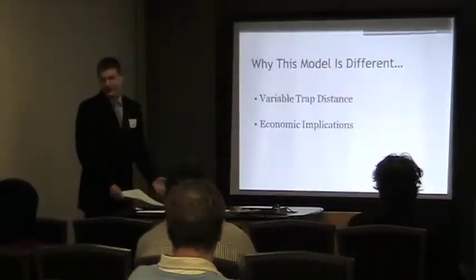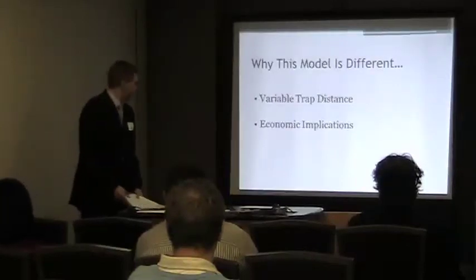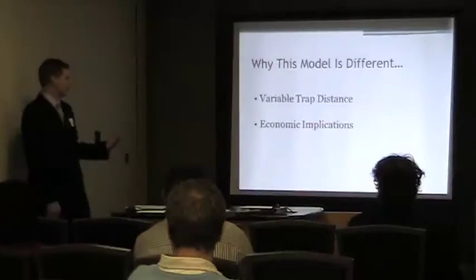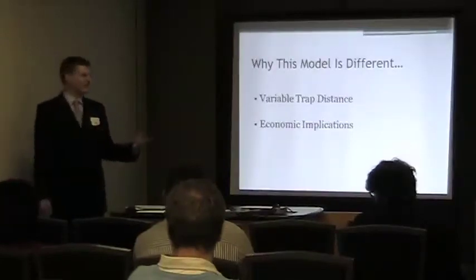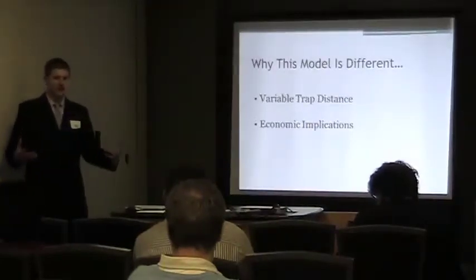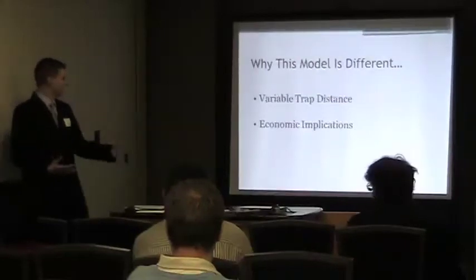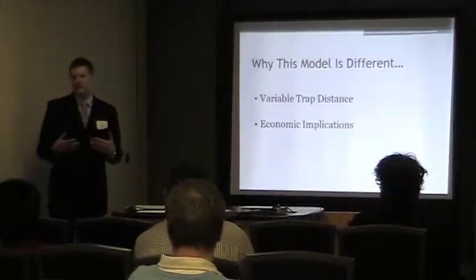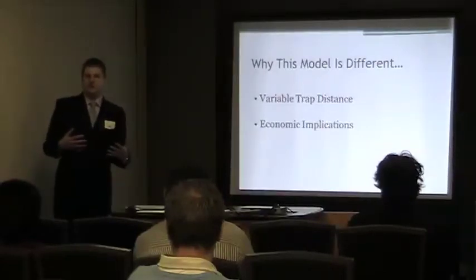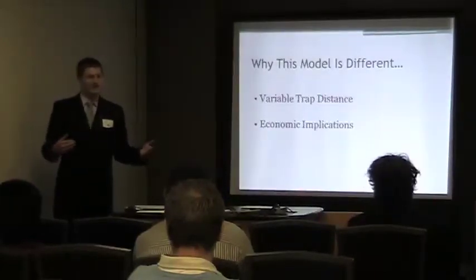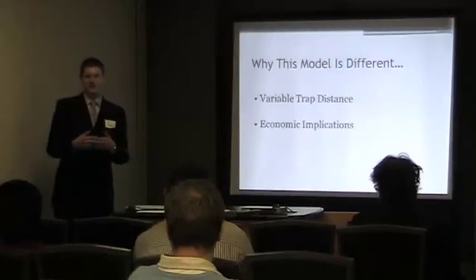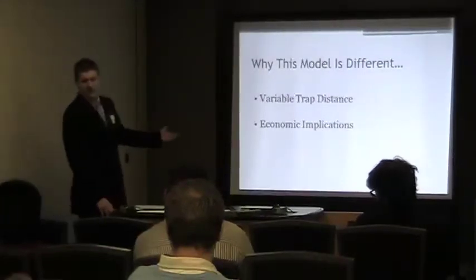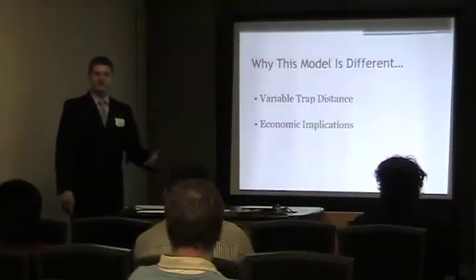Next, I'd like to get into what I did. My model changes things up because it looks at variable trap distances, whereas other models focused specifically on whether to implement traps and how that would affect outcomes. My model asks: given that you have traps, what is the optimum distance between them? If you spread them apart or bring them closer together, how likely are you to capture insects in the area? I also try to include economic implications, looking at the values of trees and the values of traps.